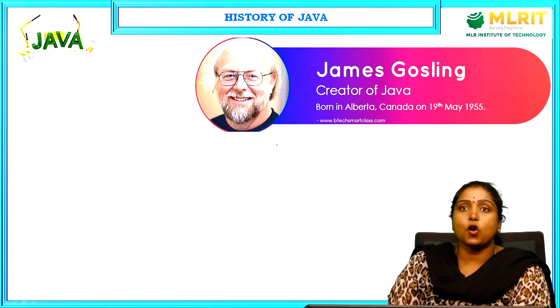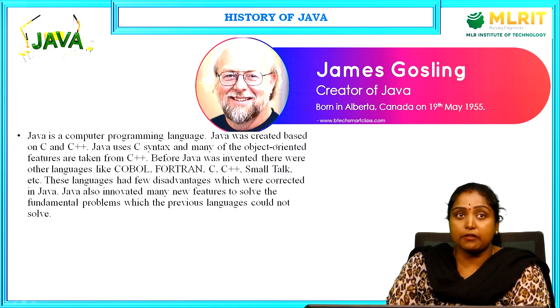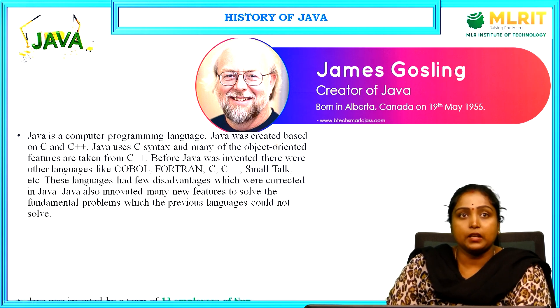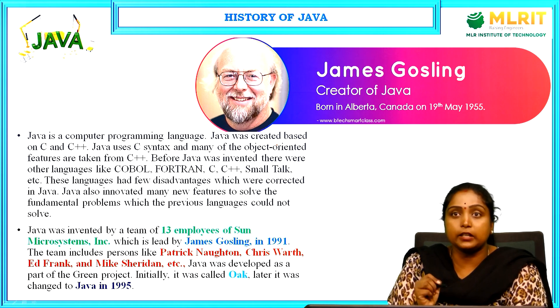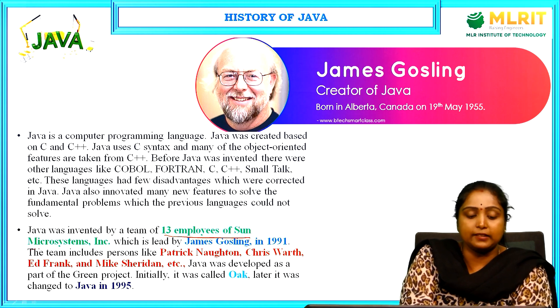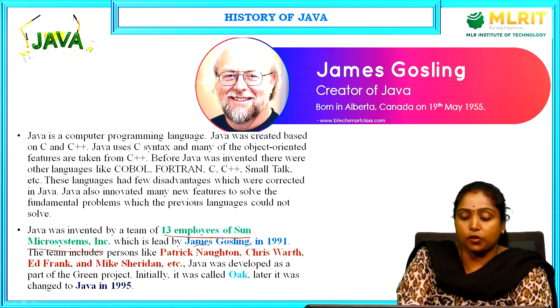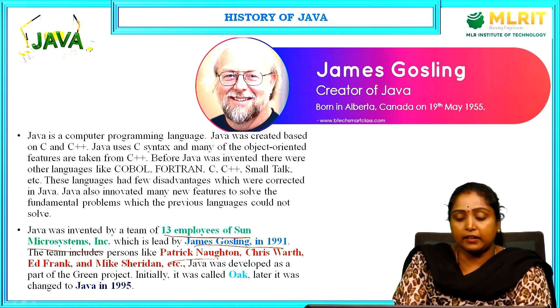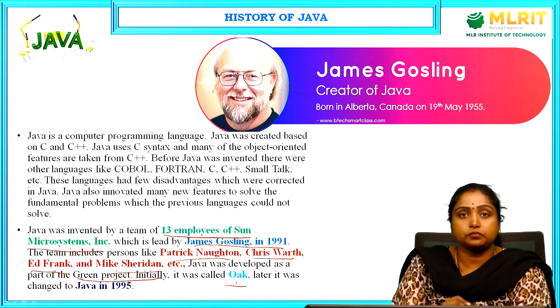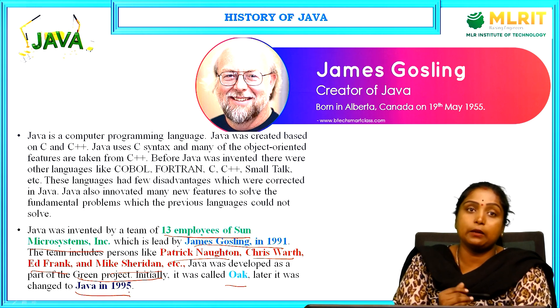Coming to the history of Java: James Gosling is the creator of Java. Java was created based on C and C++, using C syntax and taking many object oriented features from C++. Java was invented by a team of 13 employees at Sun Microsystems, led by James Gosling in 1991. Team members included Patrick Naughton, Chris Warth, Ed Frank, Mike Sheridan, and many more. Java was initially developed as a green project and was first called Oak, but later it was renamed Java in 1995.